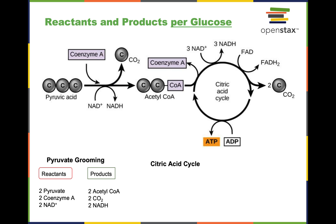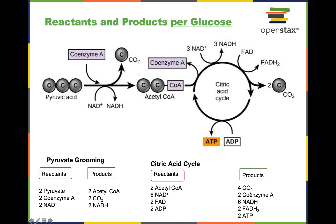For the citric acid cycle, the reactants going in are acetyl-CoA, NAD+, FAD, and ADP. What comes out is CO2, coenzyme A, NADH, FADH2, and ATP. You need to know what the reactants and products are, how many you get per glucose molecule, and how many you get per individual molecule.